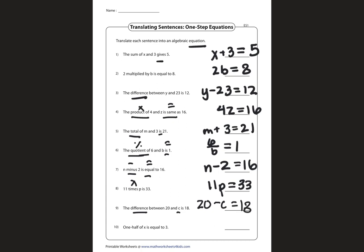Now let's look at the last one. One half of x is equal to 3. Whenever it's one half, you divide it by 2. So x divided by 2 is equal to 3.